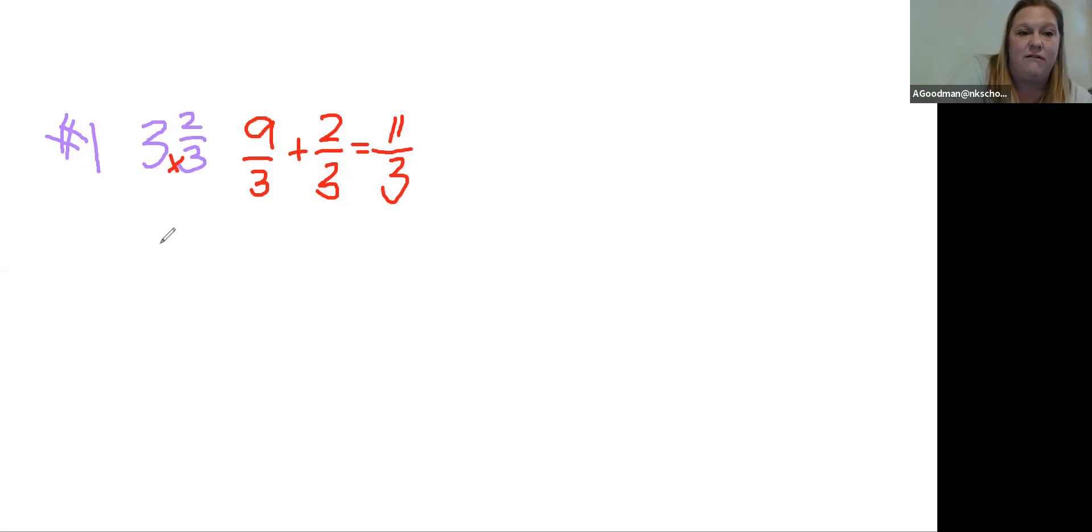Let me do one more. All right. This one's not on your worksheet. Let's go with five and three eighths. So our denominator, we're going to multiply the denominator by the whole number. Five times eight is 40 plus the leftover on the top, the numerator from the top of the fraction, plus three over eight, right? So equals 43 eighths.